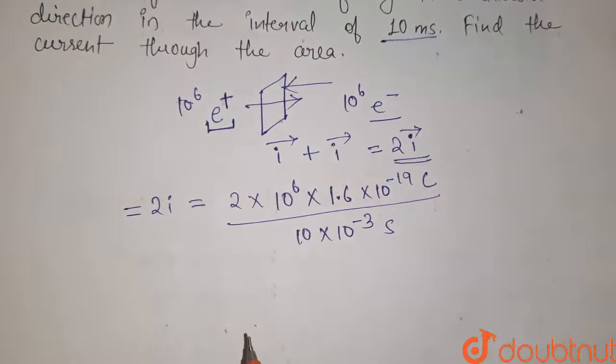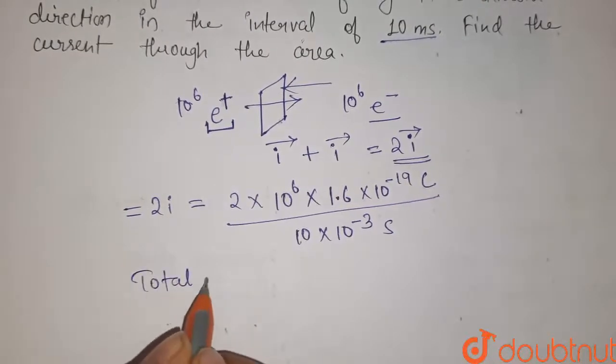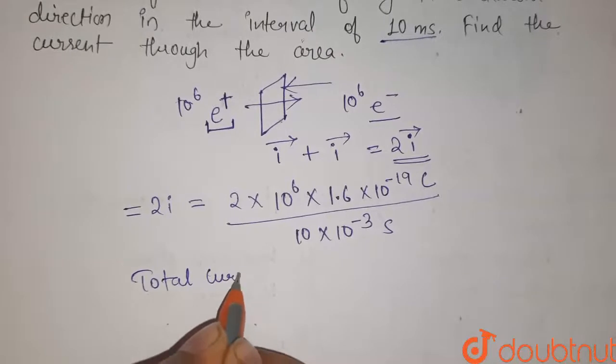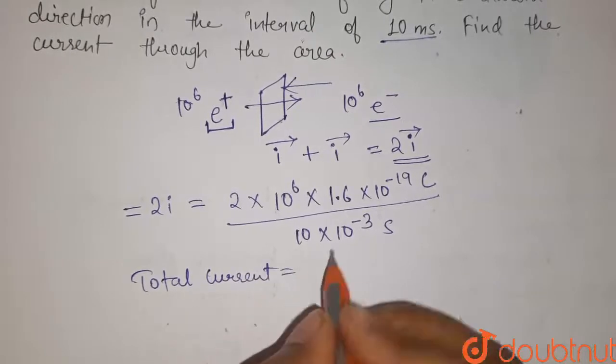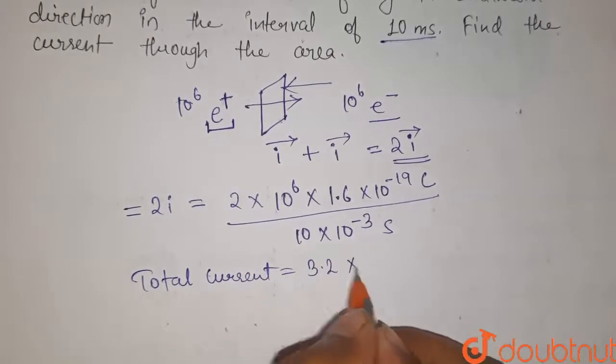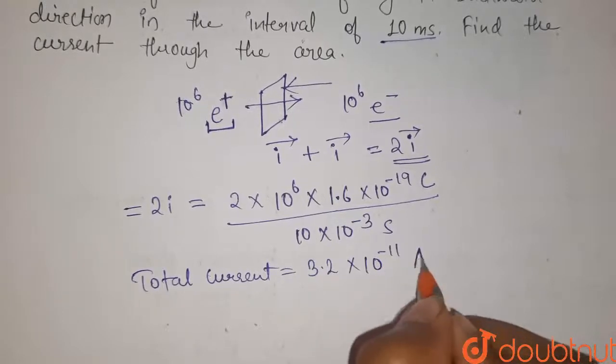So on simplifying this, the value of total current will be equal to 3.2 × 10^-11 amperes.